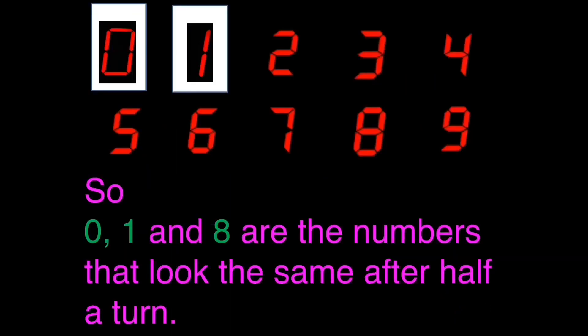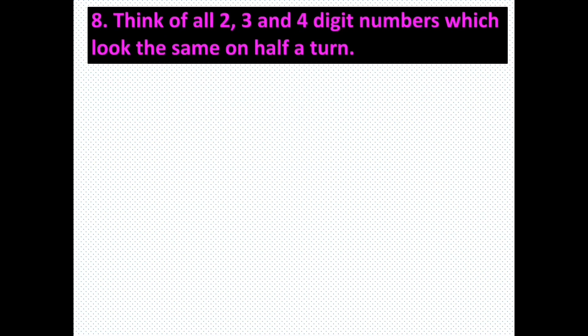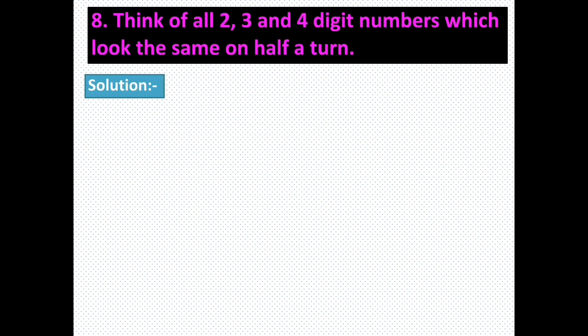0, 1, and 8 are the numbers that look the same after half a turn. Now think of all 2-digit, 3-digit, and 4-digit numbers which look the same on half a turn.